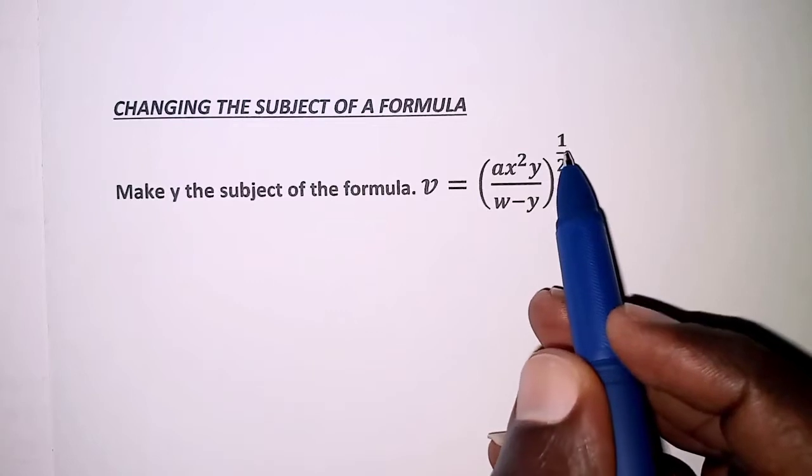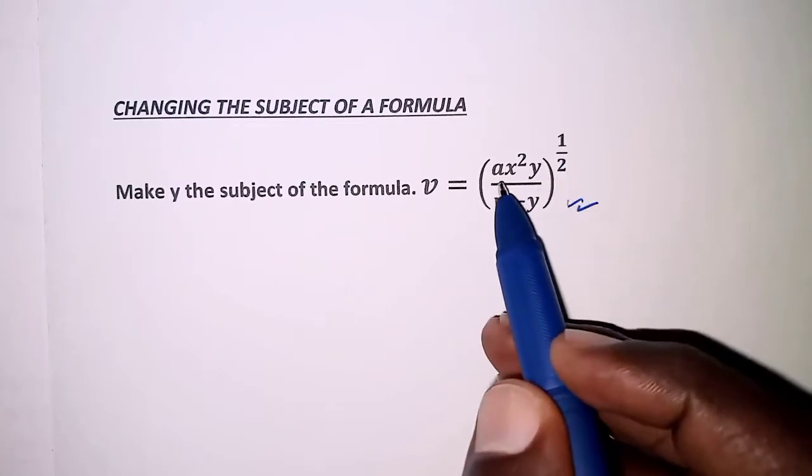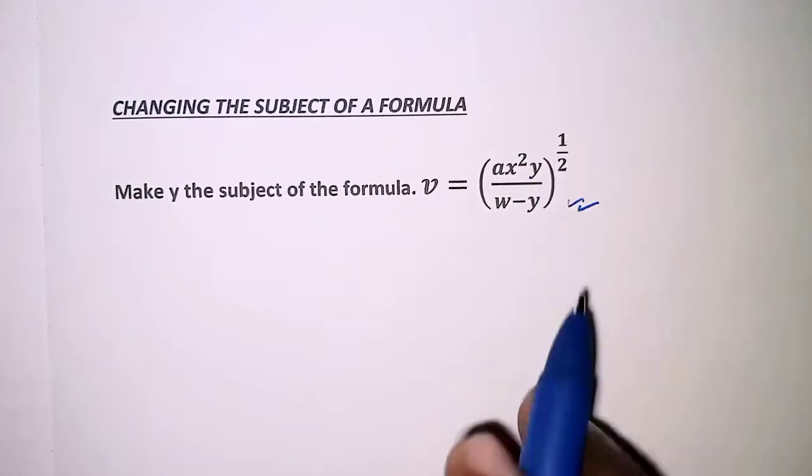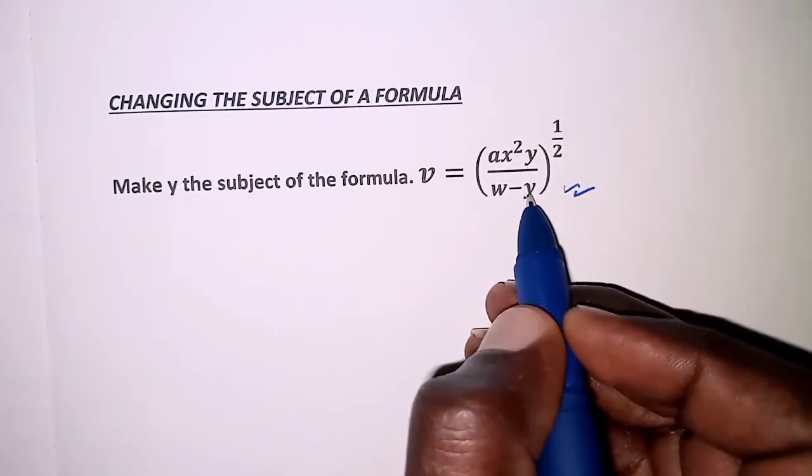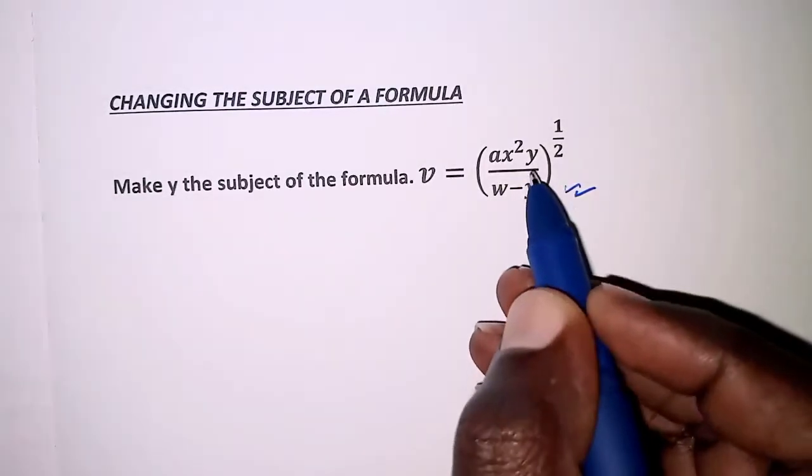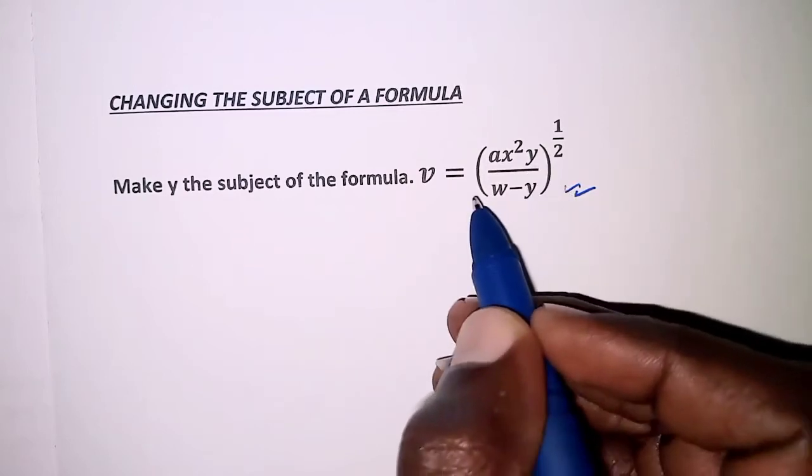This is equivalent to finding the square root of the brackets. Remember we want to make Y the subject, and for this case it's like we have Y in a root sign, so we have to eliminate the roots and that is eliminating the power half.